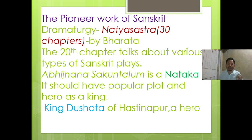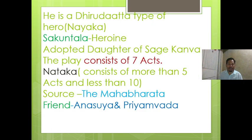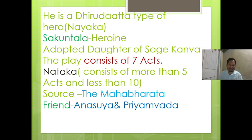King Dushyanta is the nayaka (hero) of the play, and he is a dhira-udatta type of nayaka. The heroine is Shakuntala, she is the naika of the play. She is adopted by Sage Kanva, so Sage Kanva is the foster father of Shakuntala. This play consists of seven acts.